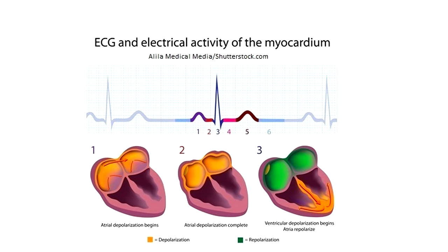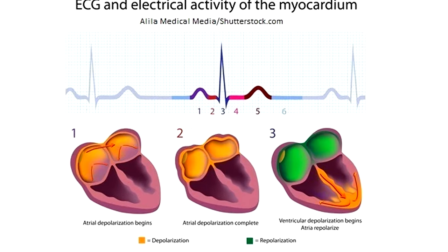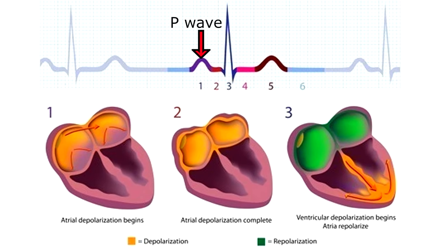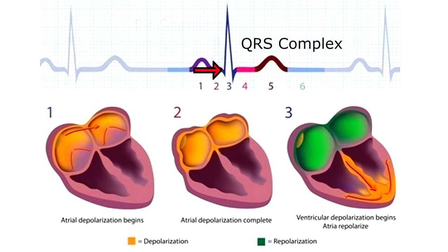So now let's recap all that information and look at this PQRST complex to see how depolarization and repolarization is occurring in each part of that complex. Section one is the P wave, which represents atrial depolarization beginning — so we have the contraction of the atria. Then two is the PR segment, which represents atrial depolarization complete — it's done. Then three is the QRS complex, and it represents ventricular depolarization beginning.